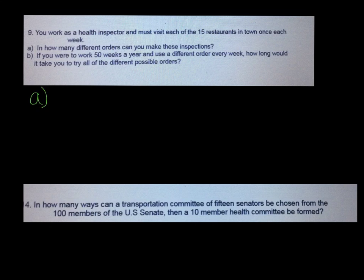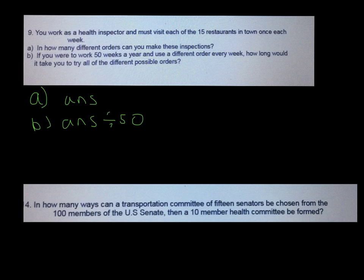For 9b, you've already done all the work for this question in part a. You had your answer for part a, which I told you was correct. All they're asking you to do in b is just take that answer, and if you work 50 weeks a year, how long would it take you to try all the different possible orders? You're just going to take that answer and divide it by 50, and that'll give you the number of years it would take to try all the different combinations you found in part a.